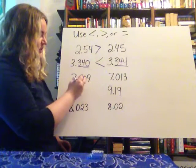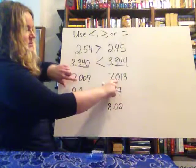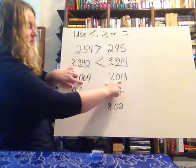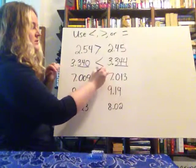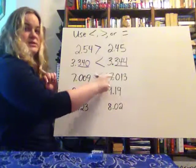As you take a look at this one, again, comparing place value, the ones place is the same, you look at the tenths place is the same, the hundredths place, one is bigger than zero. So therefore, this number is less than this number.